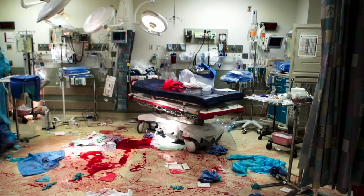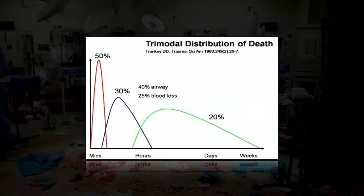Trauma can be a very hectic and chaotic environment. There's that general principle of the golden hour — a very limited period of time in which sick trauma patients give us to intervene. Thinking about trauma mortality, there's really a trimodal distribution of death along this continuum. The first hump comes within minutes of the trauma — scenarios like a gunshot to the heart or a massive head injury from a high-speed motor vehicle accident.